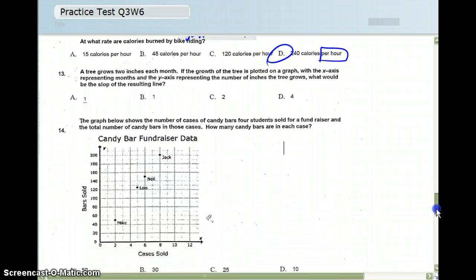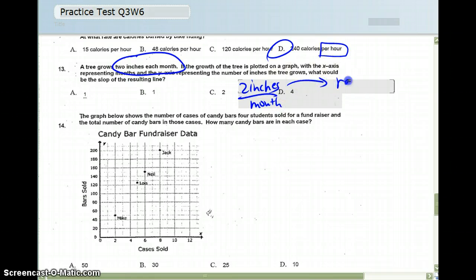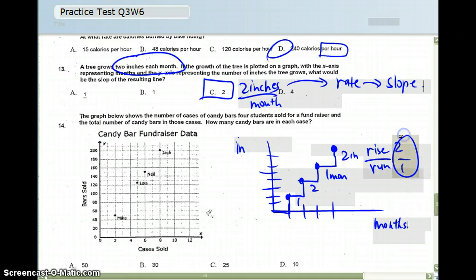Number 13, we have the growth of tree growing 2 inches per month. 2 inches per month is really a representation of a rate. And a rate is a representation of slope. So my slope would automatically just be 2. Because what you're going to see on your graph, if I have months here and inches here, you're going to see a steady growth each month of 2 inches. So the rise is 2, and the run is 1. That's why the answer is 2 here.